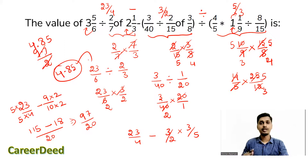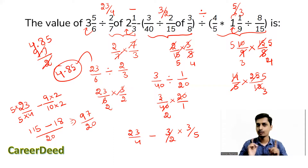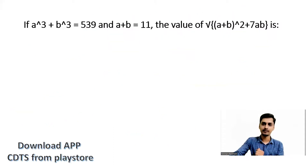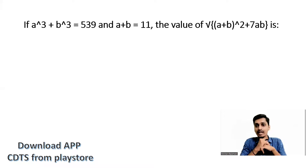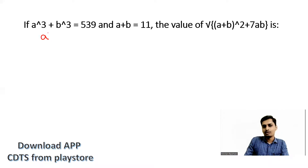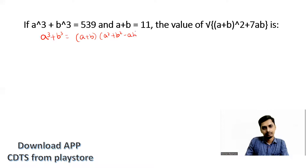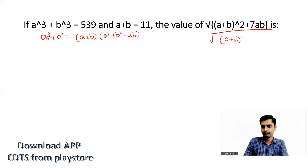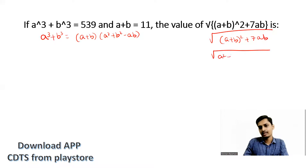Now question 3: if a³ + b³ = 539 and a + b = 11, find the value of √(a² + b² + 7ab). To solve this we need to know that a³ + b³ = (a + b)(a² + b² − ab). And we want to find √((a + b)² + 7ab).